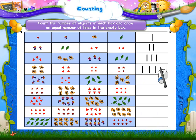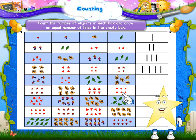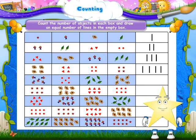Five kites. Five dots. Five leaves. Five flowers. So draw five lines in the box.